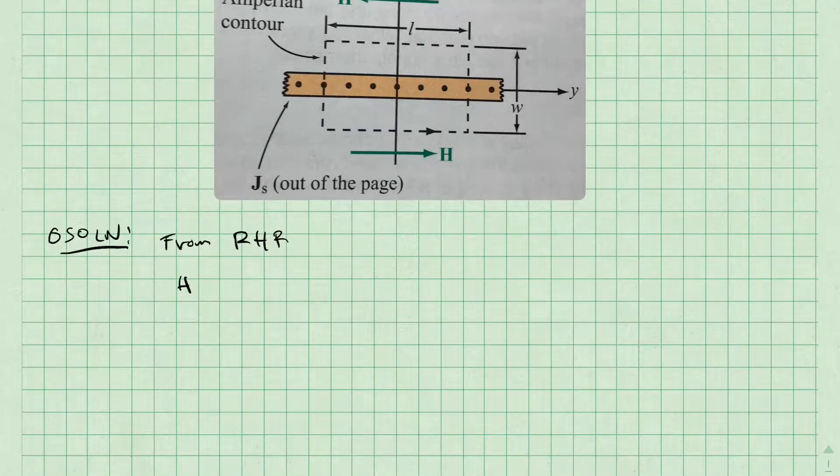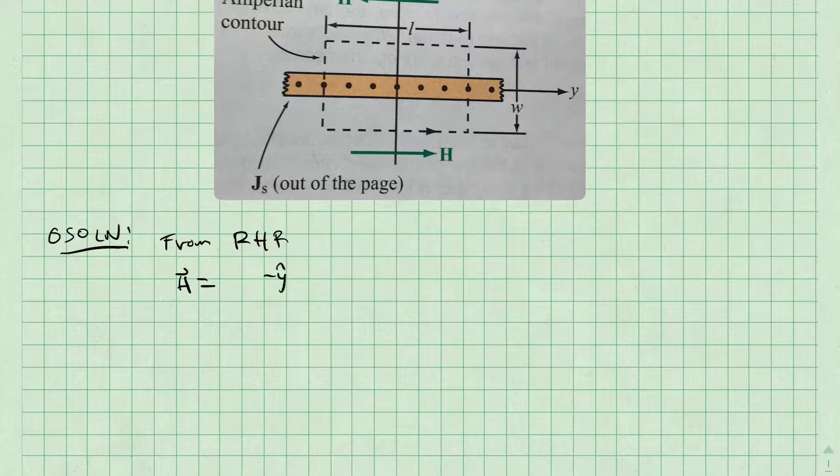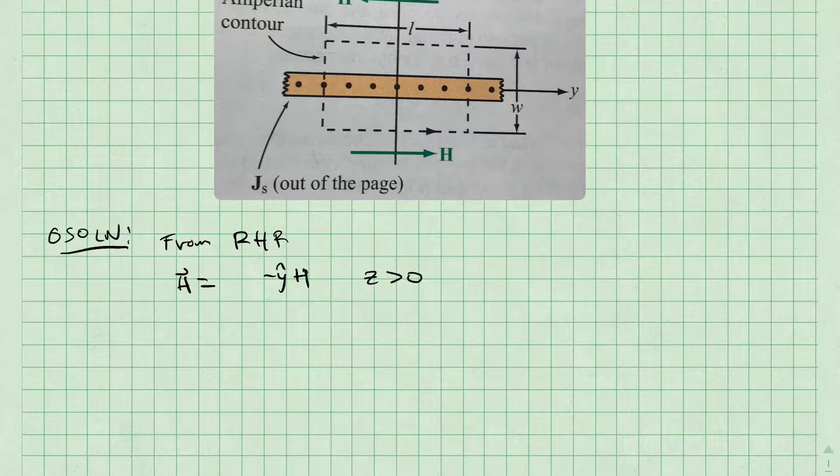If we apply the right-hand rule, putting our thumb in the direction of the current density, and curling in the direction of the magnetic field, we see that H goes to the left, or negative y-hat H, for z greater than zero, and H goes to the right, or y-hat H, for z less than zero.